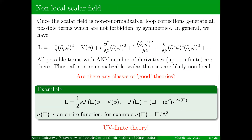Once the scalar field is non-renormalizable, we expect in the effective theory that all possible terms would appear — including derivative terms with a high, even infinite, number of derivatives, all present in the model. It would be a miracle if some terms were absent. This can happen due to some hidden symmetry, but in general we expect all are there.